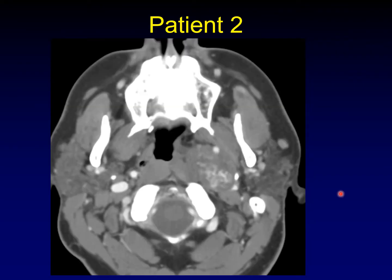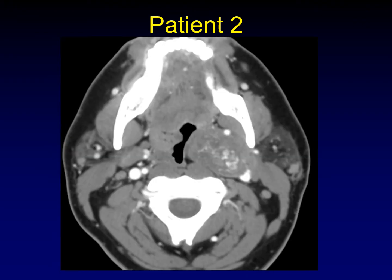Here's patient number two. Again, look at the surrounding anatomy and decide where you think this originated and what you think it is. I'll give you the jugular vein — it's right there. It can be hard to distinguish from the rest of the mass, but it's easy when you look at sequential images. Another picture of the same lesion — now the jugular vein is a little easier to identify, a little lower down in the neck.